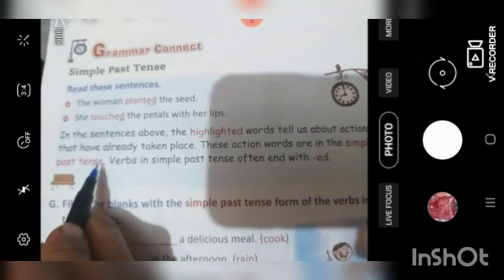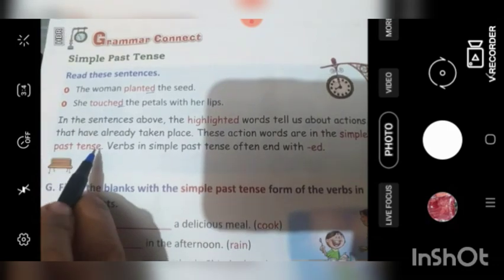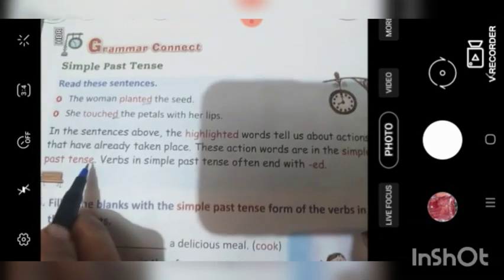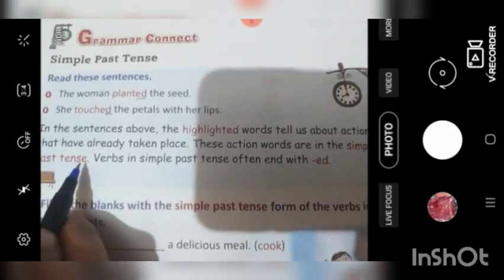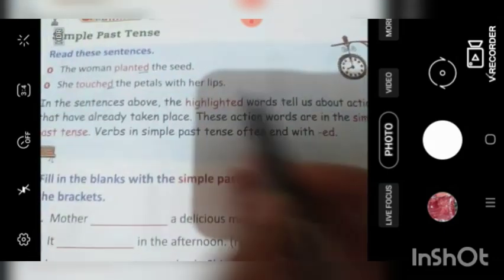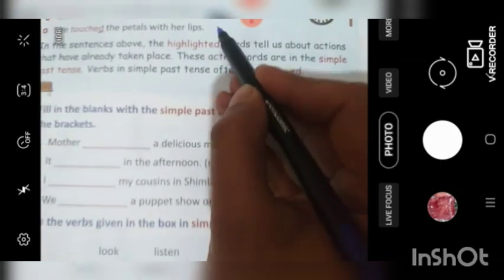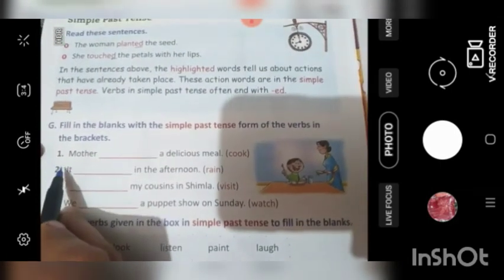Mere mami ne rath ko Maggi banai thi. My mother. Acha cooking karne ko kya, banane ko kya kehte hai? Cook. Lekin hum baat kar rahe hai raat ki. My mother cooked Maggi yesterday. So in these sentences also kis ke baare mein baat hoi hai? Woh actions joh pehle huye thay.